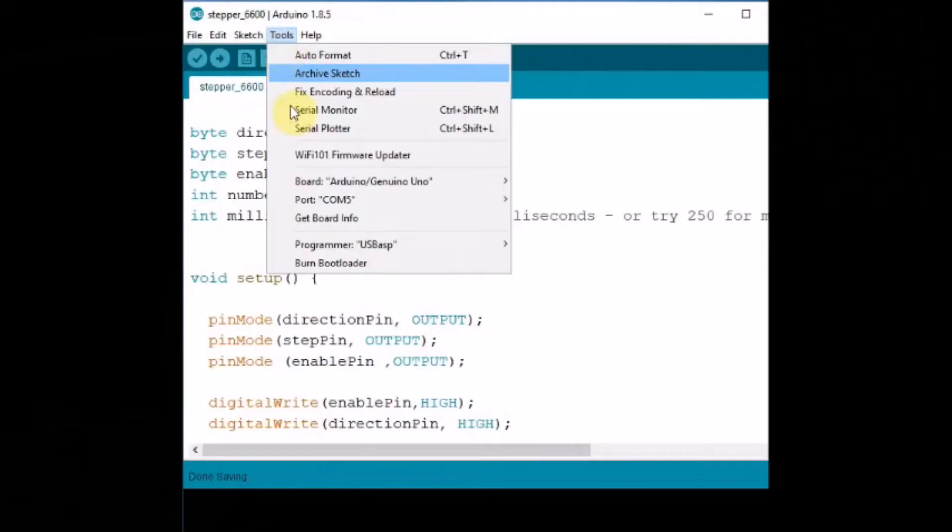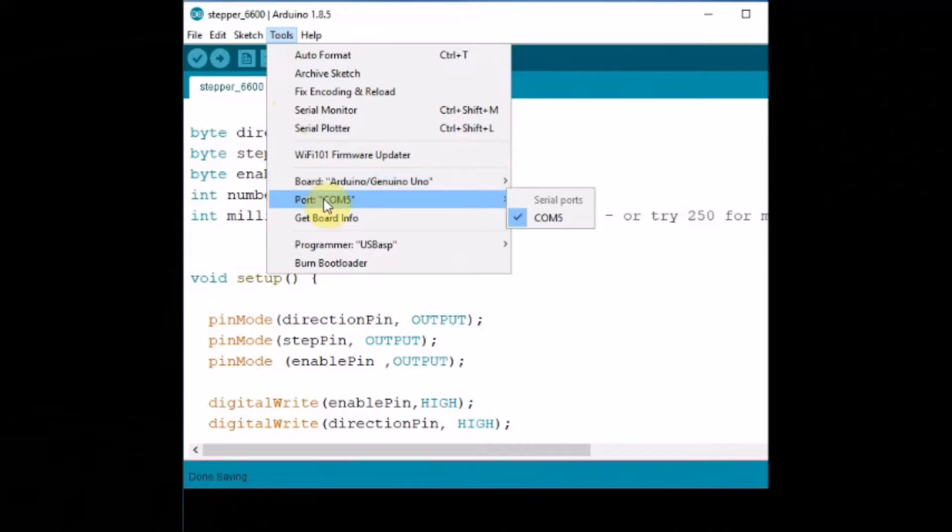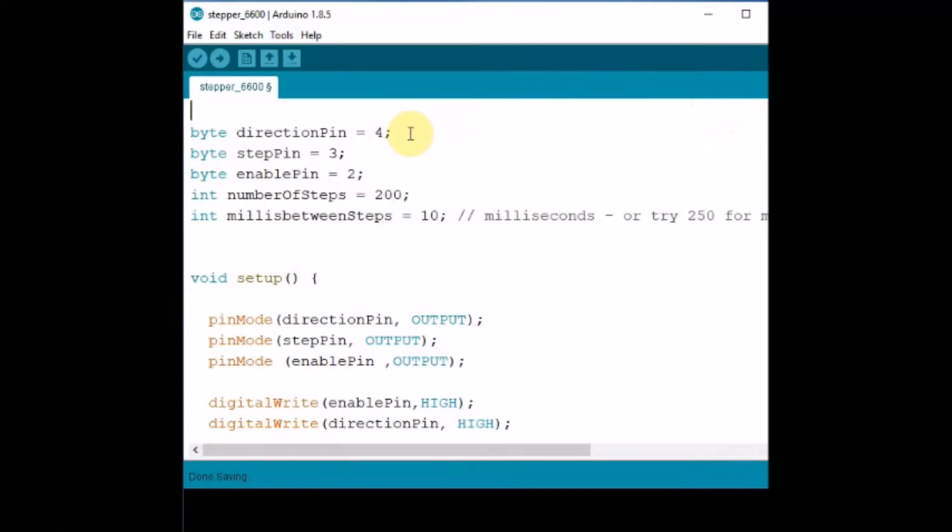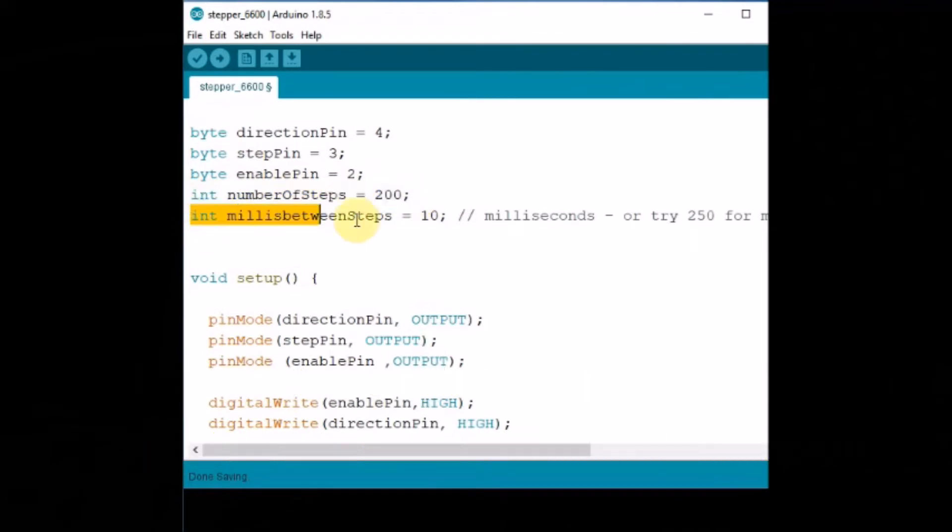Open up the Arduino IDE. First we will see the code without using any library. Here first the digital pins are declared. The direction pin is declared as 4, the step pin is declared as 3, and the enable pin is declared as 2. And the number of steps as 200. As the step angle of NEMA motor is 1.8, we need 200 into 1.8 equal to 360 for a single rotation. And millis between steps is used to control the speed of the motor.